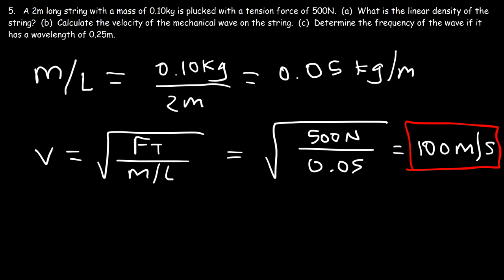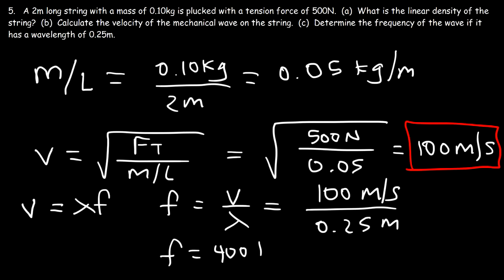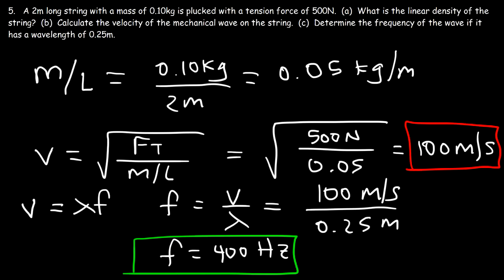Part C: determine the frequency of the wave if it has a wavelength of 0.25 meters. We know that the wave speed is the wavelength times the frequency, so the frequency is the wave speed divided by the wavelength. That's 100 meters per second divided by 0.25 meters, giving us a frequency of 400 hertz.